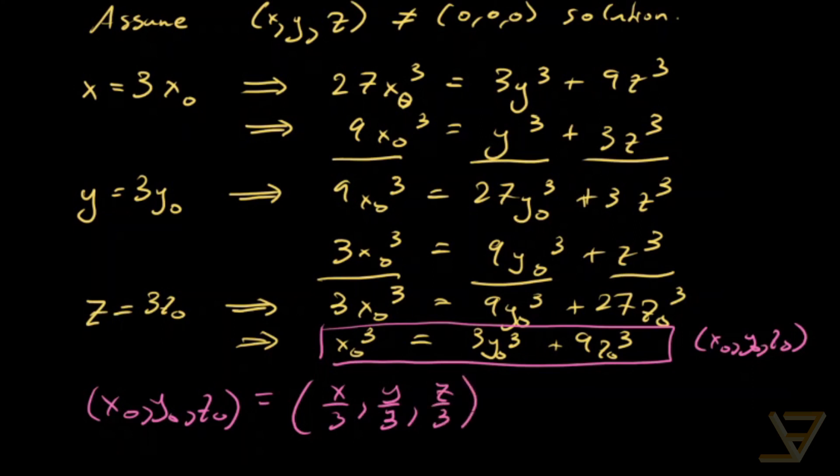And since we assumed that z is not 0, and we can assume without loss of generality that z is positive, we find a smaller z that works. In fact, we find a smaller x that works and a smaller y that works as well. So this is strictly less than x, y, z in some sense.